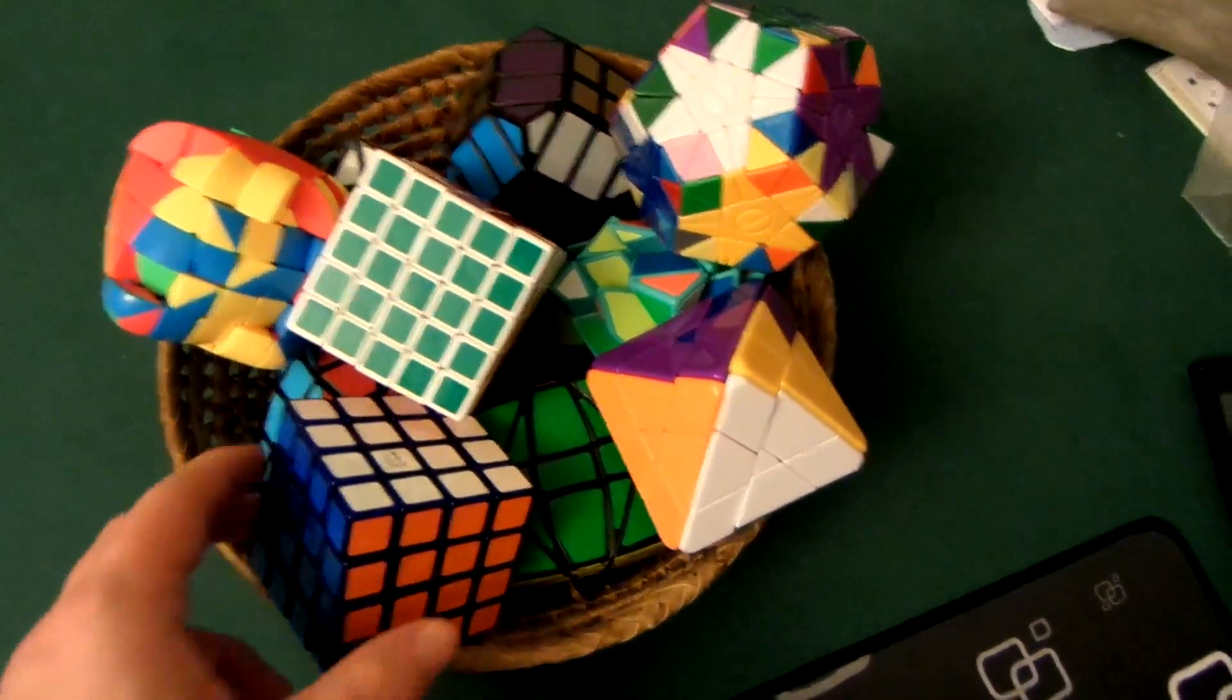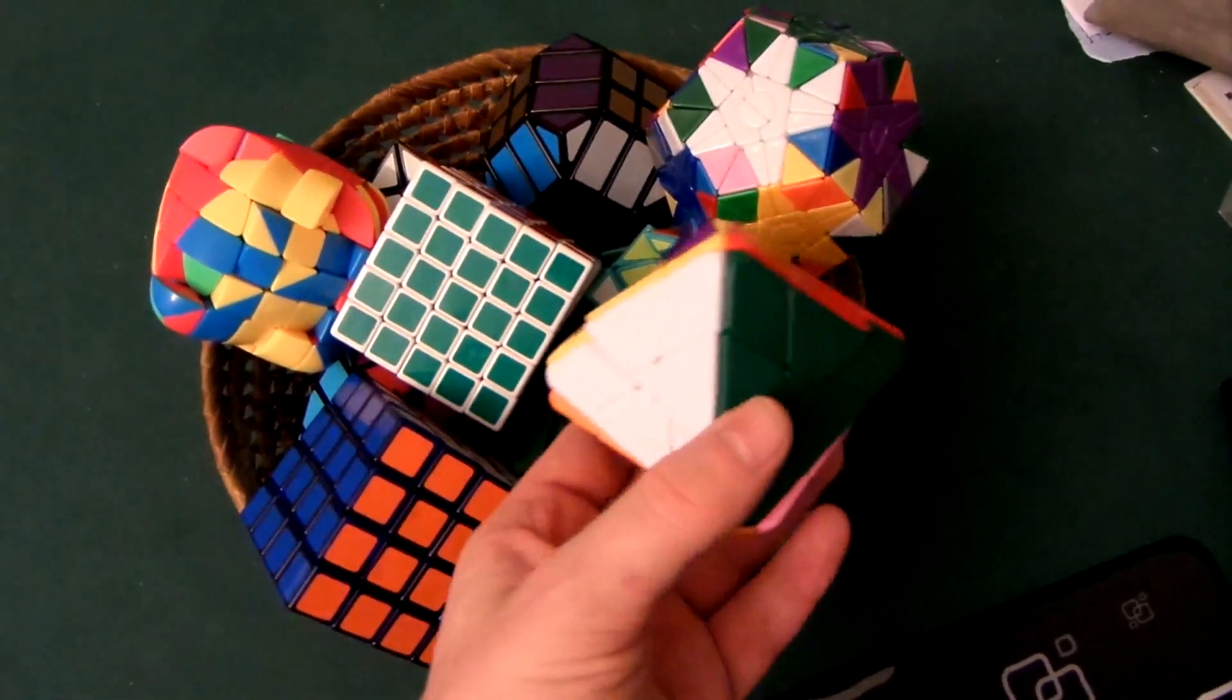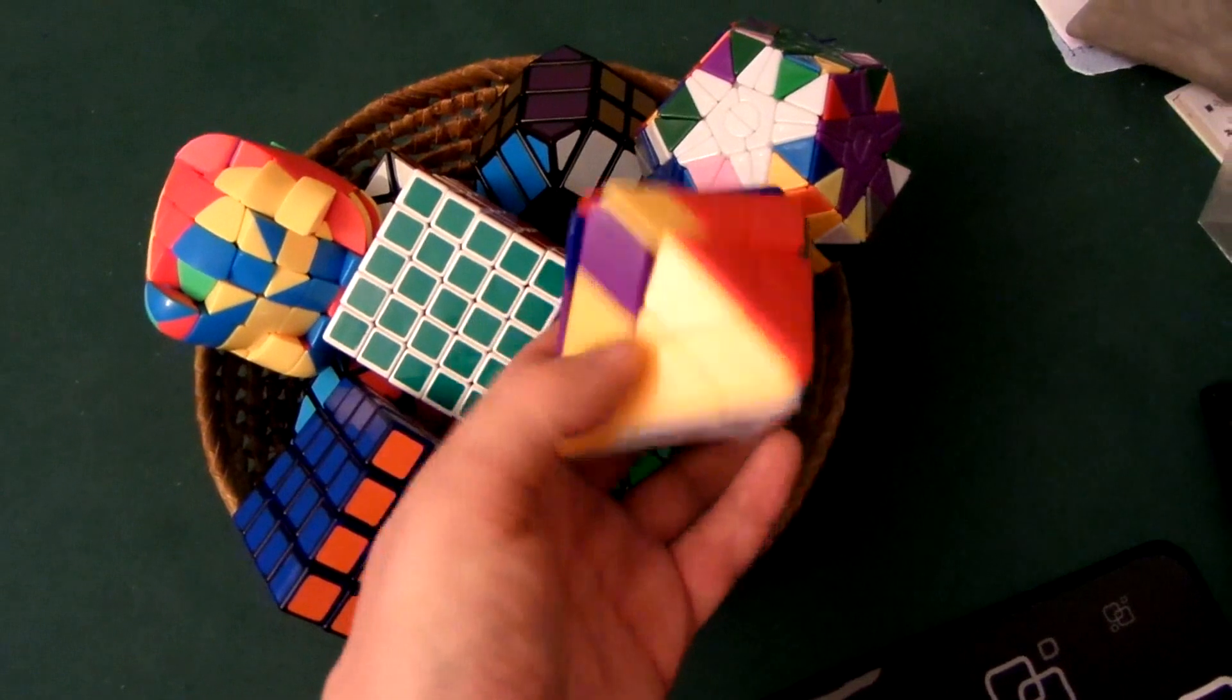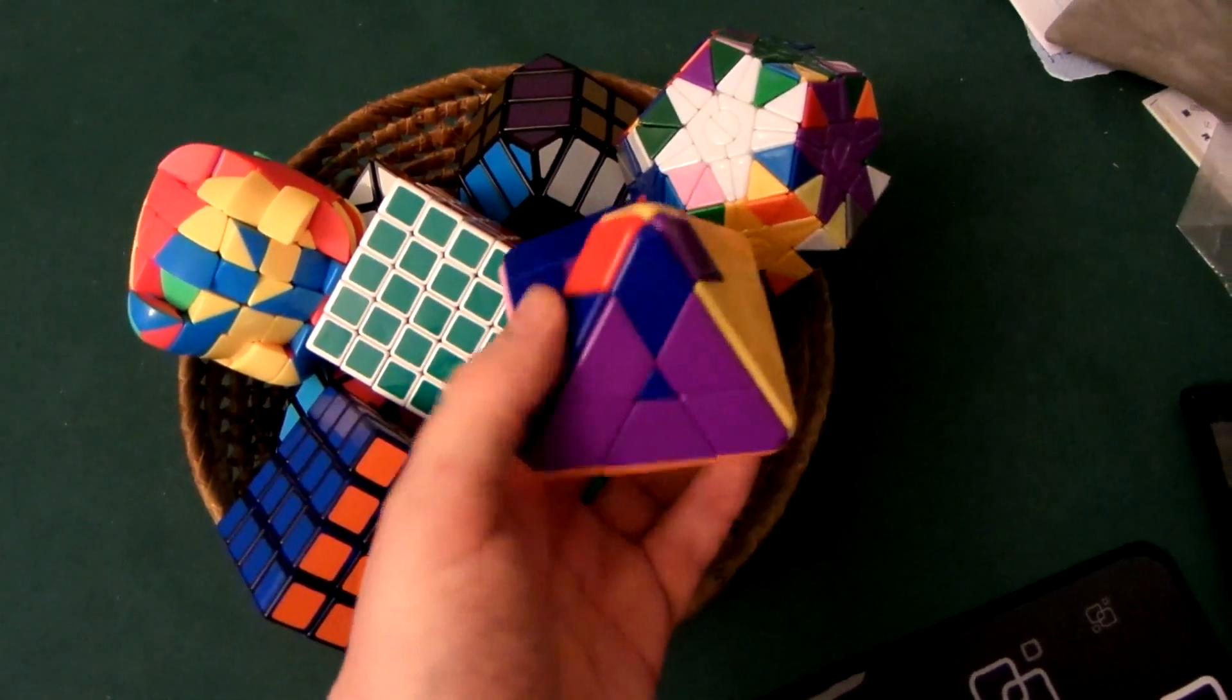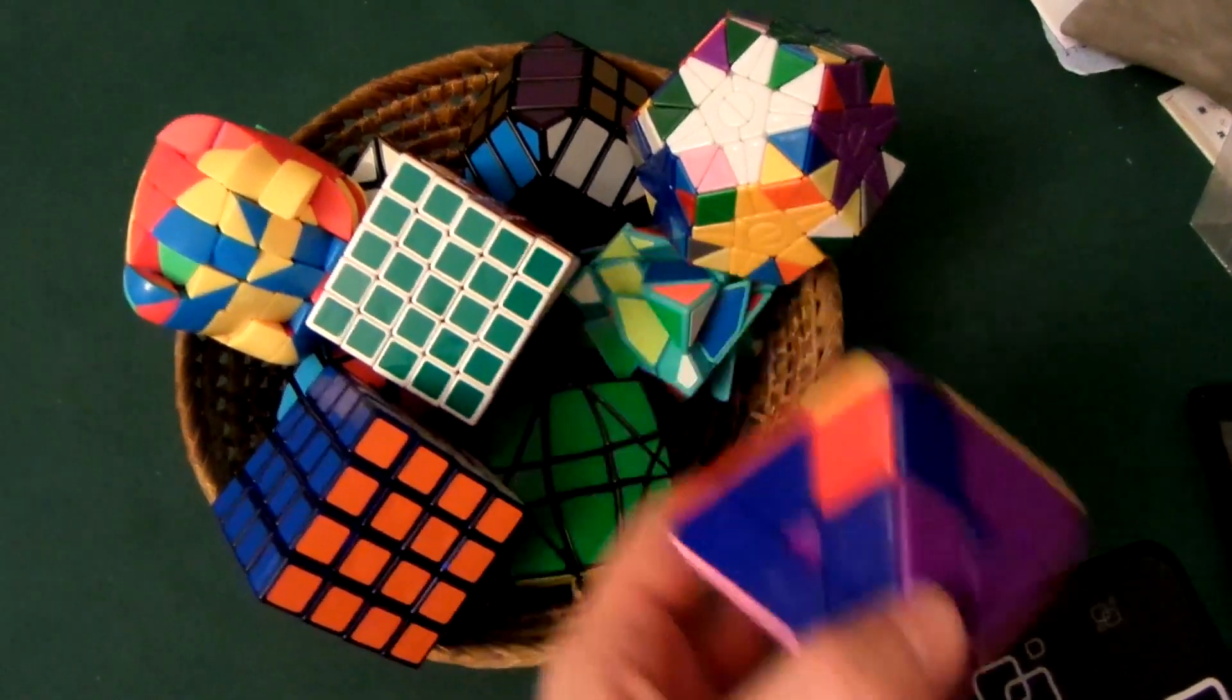Everything else I'm pretty much fine with solving on a 4x4 shape mod. So you can see this is the Landland Octahedron, and obviously the last time I tried to solve it I got stuck. I'm not really sure what happened there, but I'll see if I can overcome that.